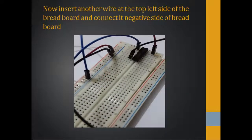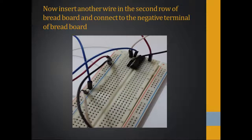Now insert another wire at the top left side of the breadboard and connect it with the negative side of the breadboard. This is basically the first input, and I'm connecting this input with the negative side. Then insert another wire in the second row — this is the second row — and connect it again with the negative side of the breadboard.